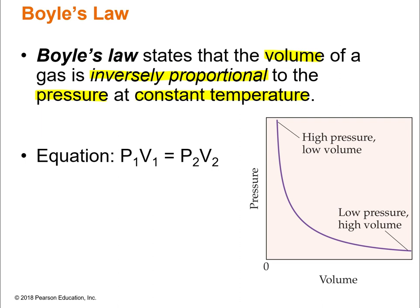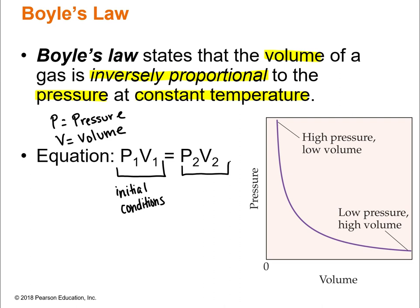The equation we use for Boyle's law is P1V1 = P2V2. P is always pressure, V is always volume. The subscript 1 refers to the initial conditions of the gas, and the subscript 2 refers to the final conditions — what happens after you change something. With all of the gas laws you'll see the same kind of initial and final conditions with subscript 1 and subscript 2 for the variables.